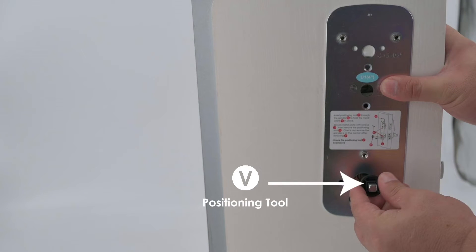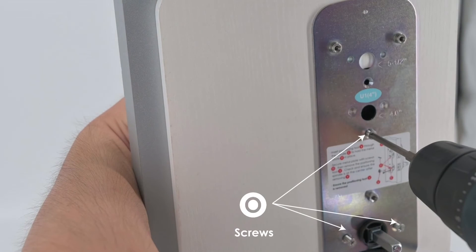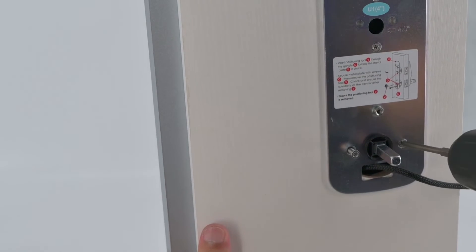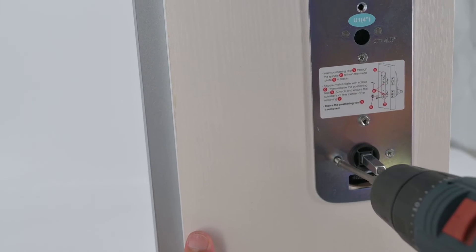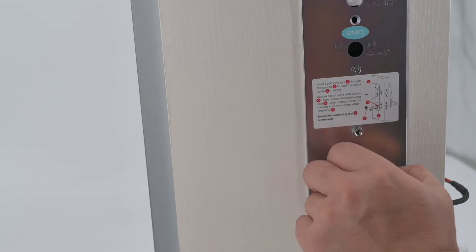Insert positioning tool V through the spindle to hold the cover plate in place. Secure cover plate with three screws O. Remove the positioning tool V. Check and ensure the spindle is at the center after removing V.